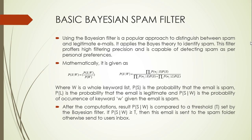Now let's see what a basic Bayesian spam filter is. Using the Bayesian filter is a popular approach to distinguish between spam and legitimate emails, and it is also one of the widely used machine learning techniques. It applies Bayes' theorem to identify spam. Mathematically it is given by two equations, where PS and PL represent the probability that an email is spam or legitimate. The Bayesian filter passes each collected email into a series of keywords denoted by W. PW|S and PW|L are the probabilities showing the occurrences of keyword W given an email is spam or legitimate. PS|W represents the probability that an email with a series of past keywords is spam.